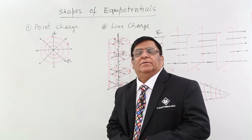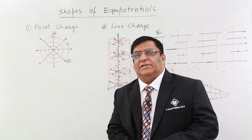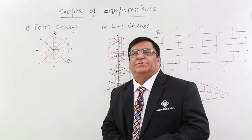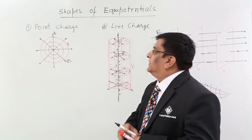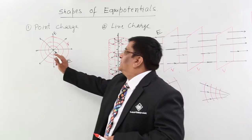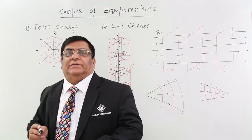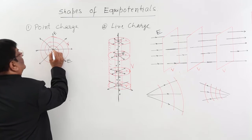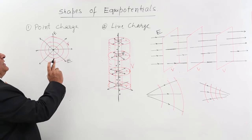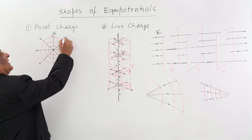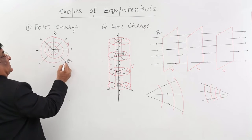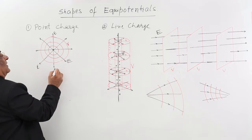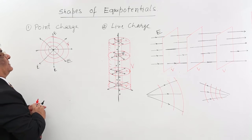Here we will see equipotential surfaces for a few charge distributions. First, our charge is in the shape of a point charge. We will first draw an electric field. For a point charge, the electric field is radially outward. Then draw perpendicular to it.